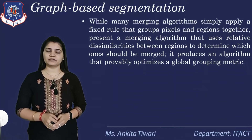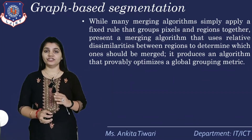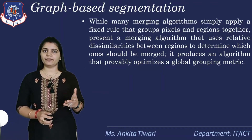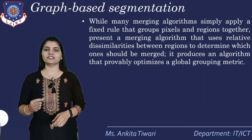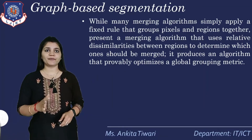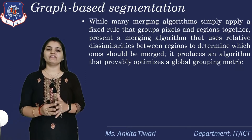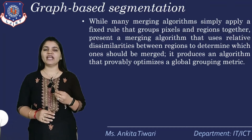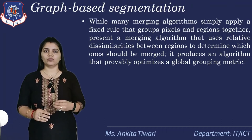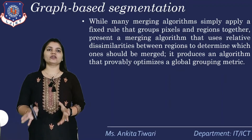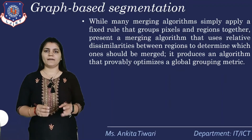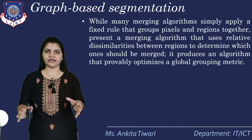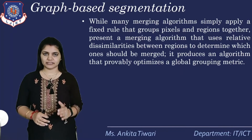Many merging algorithms involve merging and splitting — region splitting and region merging. We have already seen different algorithms such as watershed and many others. They simply apply a fixed rule that groups pixels and regions together. But whenever we want to split or merge any pixel region, we have to apply a rule to group the pixels together, grouping all the regions together, and then presenting a merging algorithm — merging or splitting — that uses relative dissimilarities.